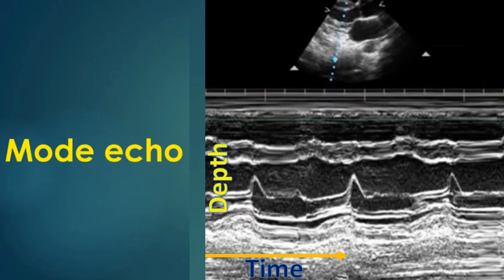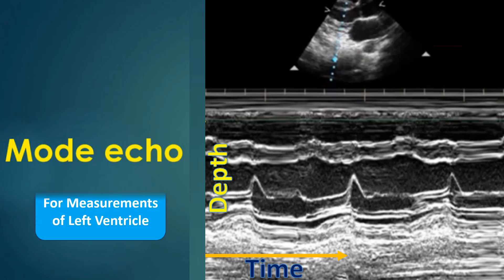M-mode examination was the initial mode of echocardiography and has been largely superseded by other modes. It is still used for taking measurements of the left ventricle to calculate the ejection fraction. The M-mode cut is taken at the chordal level for this purpose.